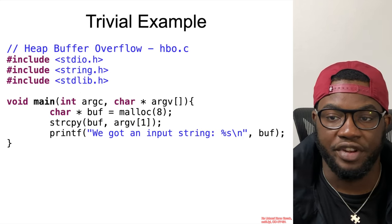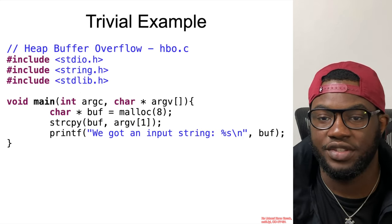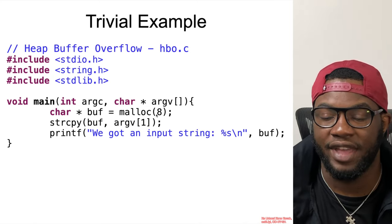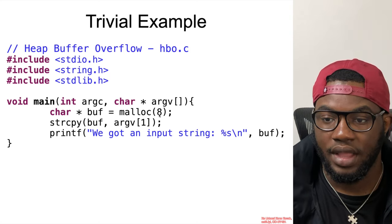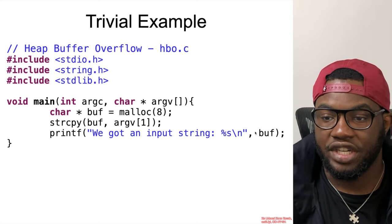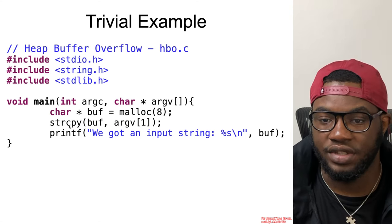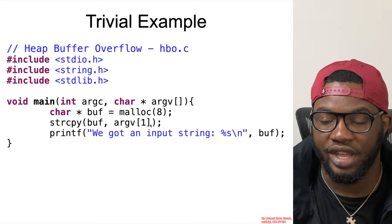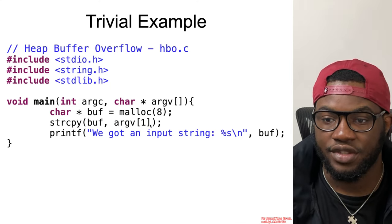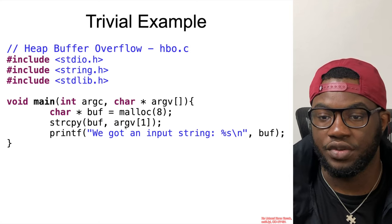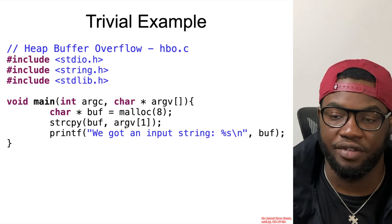Now we'll walk through a trivial example, which should also be similar to your stack buffer overflow example, except in this case the buffer is allocated on the heap via a call to malloc with a size of eight. We're expecting a program argument and will be copying that argument into the buffer using strcpy — an unbounded copy with no size specified. So if the parameter contains a string greater than length eight, we are likely going to experience a heap buffer overflow.